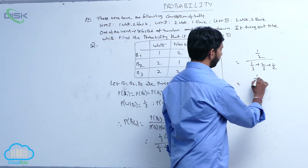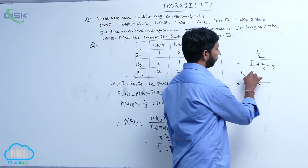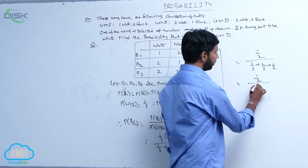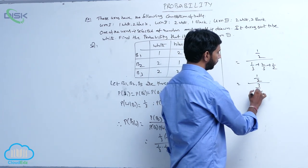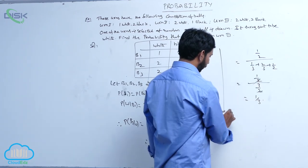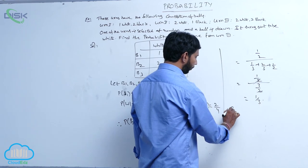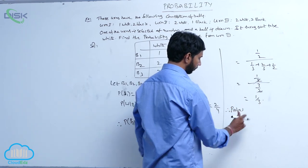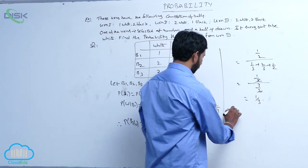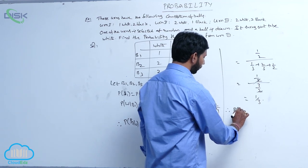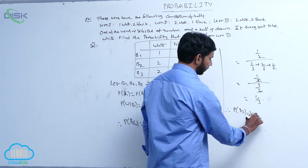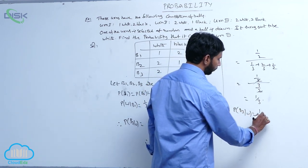This is equal to 1/2 divided by — here 1/3 plus 2/3 equals 1 — so 1 plus 1/2 equals 3/2. Therefore 1/2 divided by 3/2 equals 1/3. The probability for the white ball coming from the third bag is equal to 1/3.